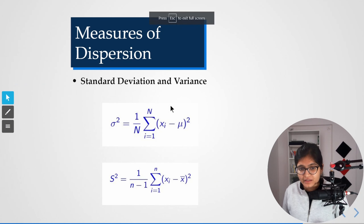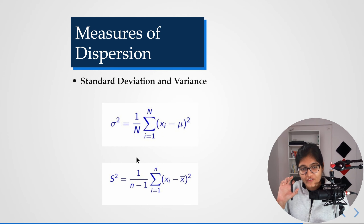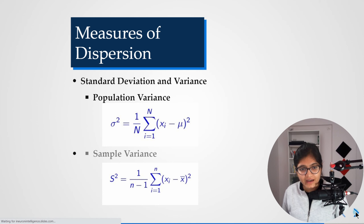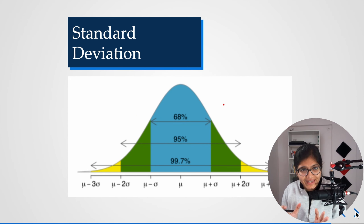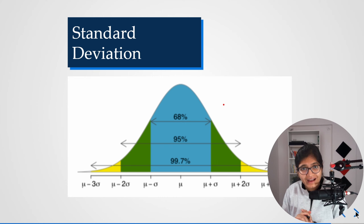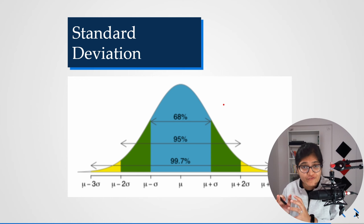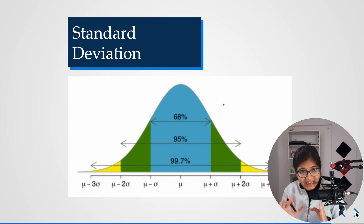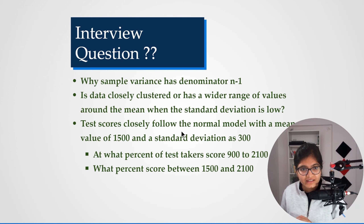Coming back to the presentation: variance is another measure of dispersion that checks how far the values are from the mean, whether it be population mean or sample mean. That part is done. Next I want to cover how data is spread across a distribution according to a given standard deviation and mu value — so if someone gives you mu and sigma, you can tell how much of the data is spread across the distribution. I'll explain this with a graph in the next part of the video.